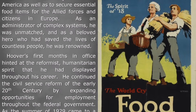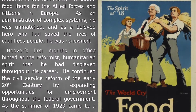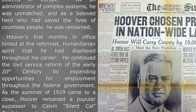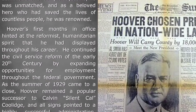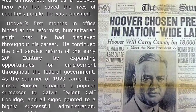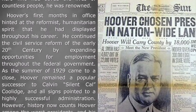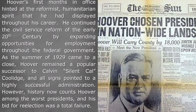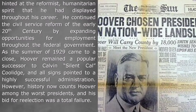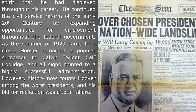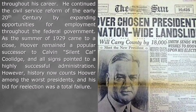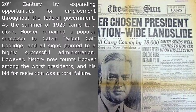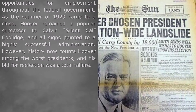Hoover's first months in office hinted at the reformist, humanitarian spirit that he had displayed throughout his career. He continued the civil service reform of the early twentieth century by expanding opportunities for employment throughout the federal government. As the summer of 1929 came to a close, Hoover remained a popular successor to Calvin 'Silent Cal' Coolidge, and all signs pointed to a highly successful administration. However, history now counts Hoover among the worst presidents, and his bid for re-election was a total failure.